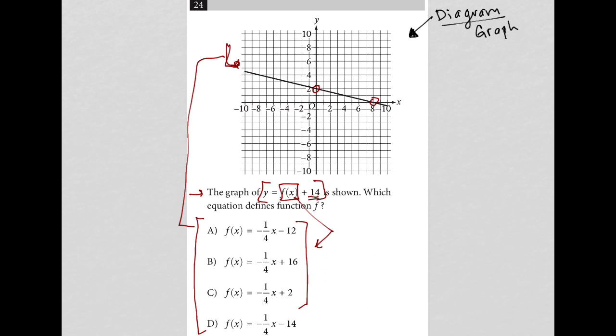So the question is, what does adding this 14 do to the function f(x)? Well, all it does is give it a vertical shift up 14 units, which means, let me clean all this up.